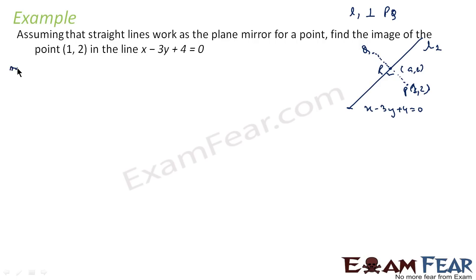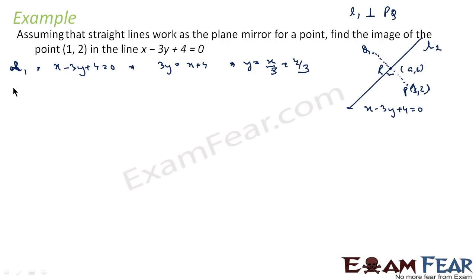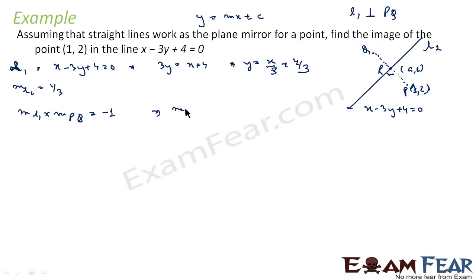First find the slope of line L1. The equation x minus 3y plus 4 is equal to 0 can be written as y is equal to x by 3 plus 4 by 3. So m of L1 is 1 by 3. We know that m of L1 into m of PQ is equal to minus 1. So m of PQ is equal to minus 1 divided by m of L1, which is 1 by 3, so this becomes minus 3. So we have the slope of PQ.